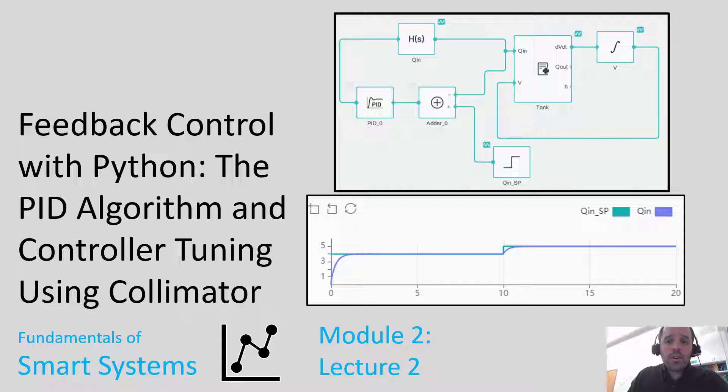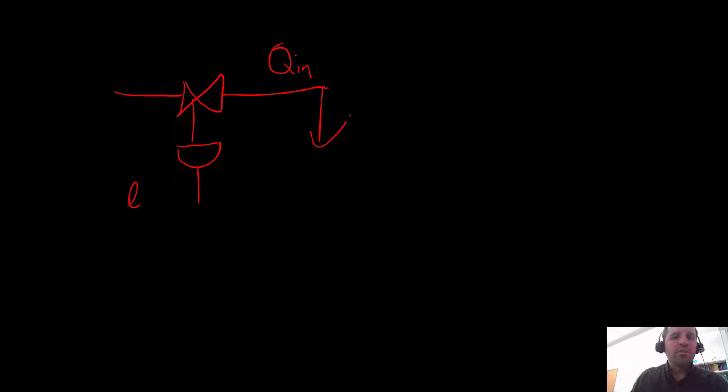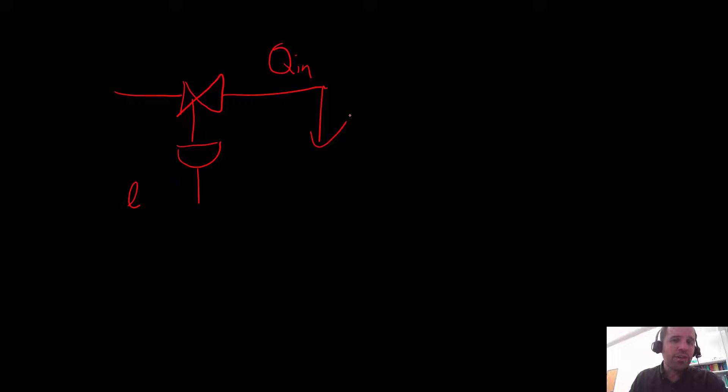In our last video lecture we talked about how to model a simple process using a first-order transfer function, and specifically we were talking about modeling the flow through a pipe as a function of valve position. If we have a valve, we came up with an approximate relationship where you could model the flow rate Qn as a function of the lift or valve position. You can't just specify a particular flow rate — what you actually do is control the position of the valve, and so to achieve a particular flow rate you would add an automatic controller. We're going to teach you how to simulate this using Collimator.